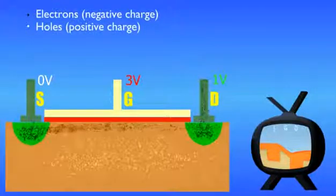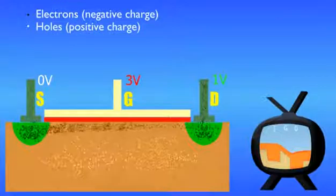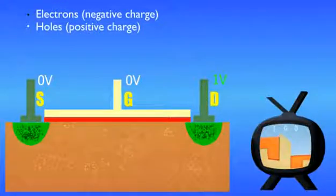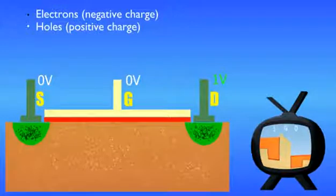Under these conditions, the device behaves like a switch in its on state. If the voltage is not high enough to lower the barrier, there is no current, and the device behaves like a switch in its off state.